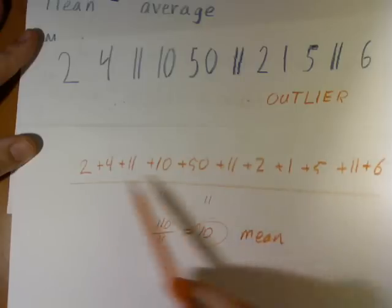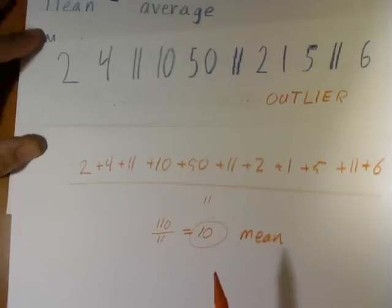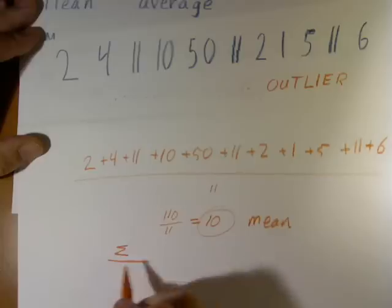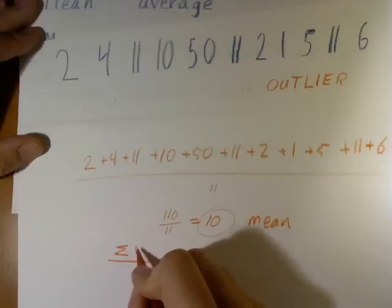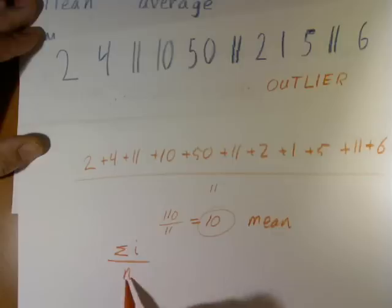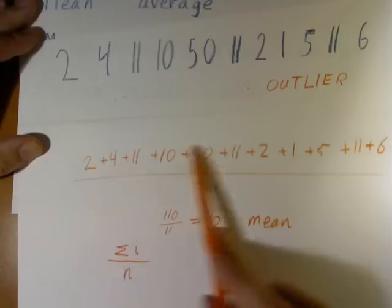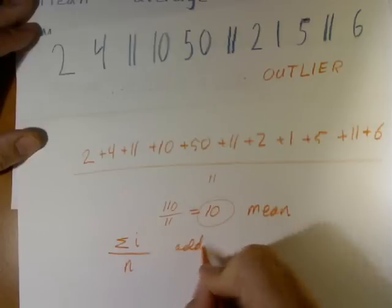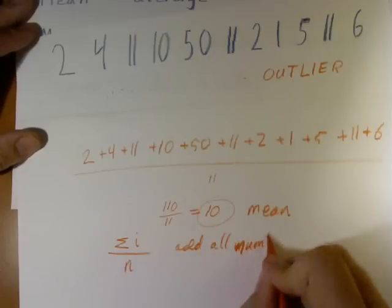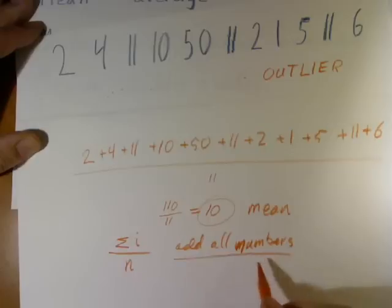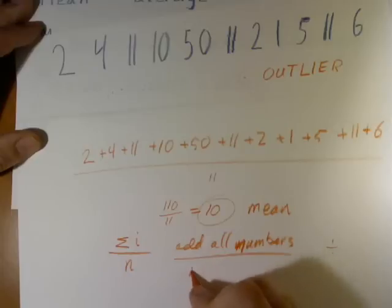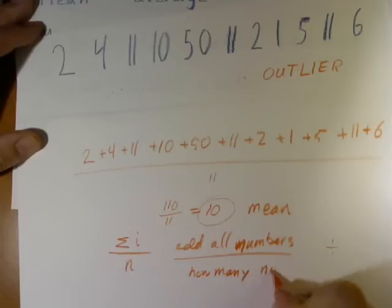That's the average of all of these numbers. To write it down mathematically, we'd say we add up each of our numbers — I'll call our numbers I — and then divide by the total number of numbers we have. But if it's easier for you, just remember: add up all the numbers and divide by how many you have.